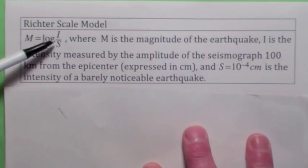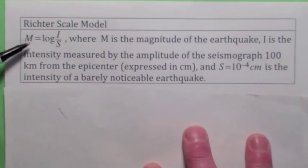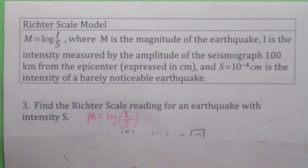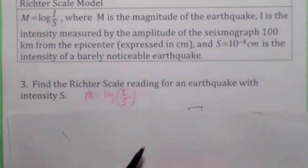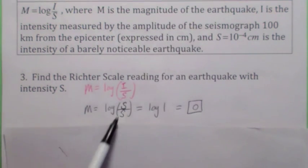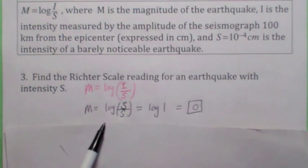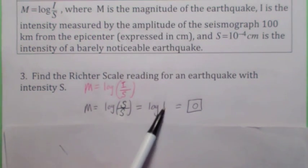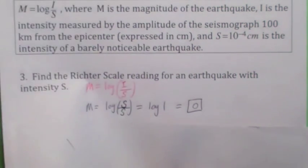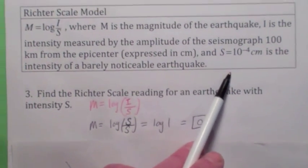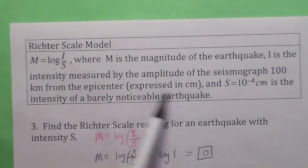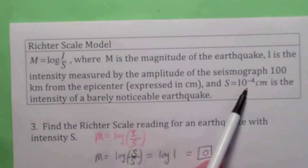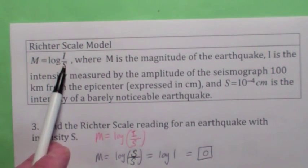What's nice about the Richter scale is — for example, what would the Richter scale reading be for S? If you plug in S for I, you get the Richter scale reading is logarithm of S over S, which is log of 1, which is zero. So isn't that clever — the Richter scale reading for the threshold of whether you could notice an earthquake or not is zero. That's what this design achieves.